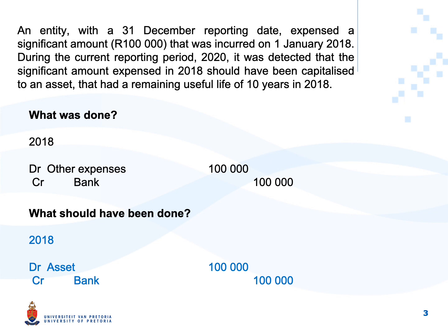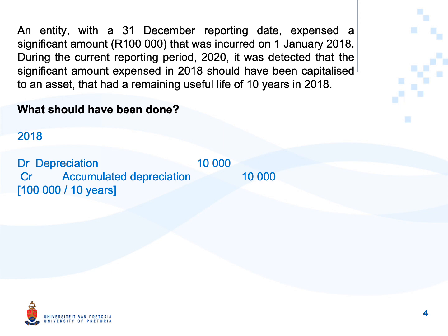The next step is to determine what should have been done. The given information tells us it should have been capitalized to an asset. They don't specify which asset, but because they mention a remaining useful life, we can assume it's some sort of property, plant and equipment. So what should have been done is: debit asset, credit bank. The bank amount is not a problem — bank is usually not an issue because we do monthly bank reconciliations and detect errors in bank much sooner. The problem lies between the other expense and the asset. Furthermore, we also should have accounted for depreciation on the asset over the remaining useful life of 10 years.